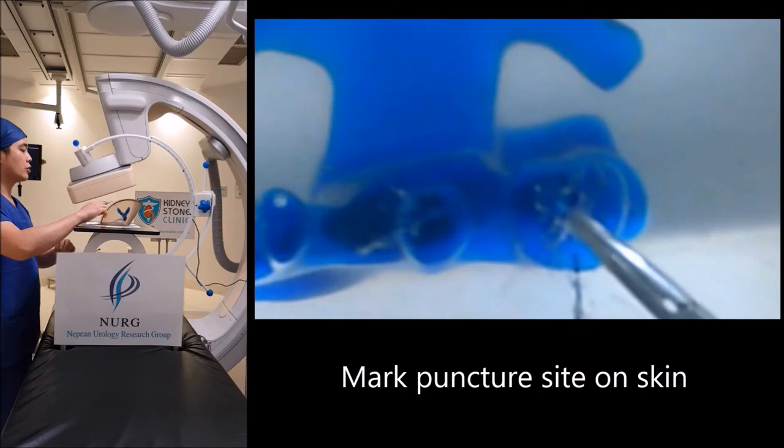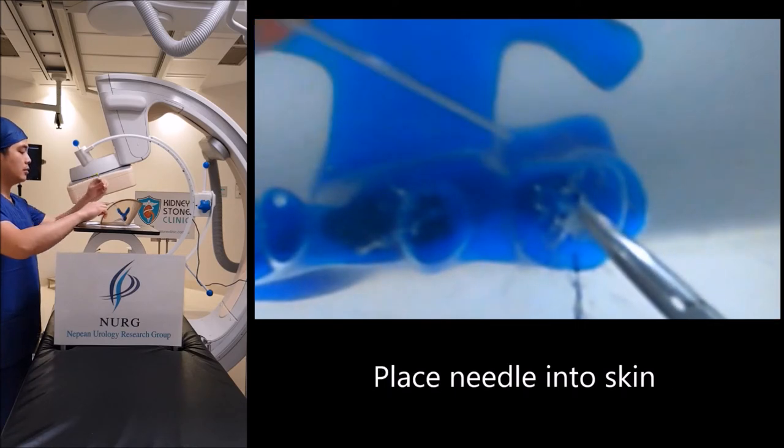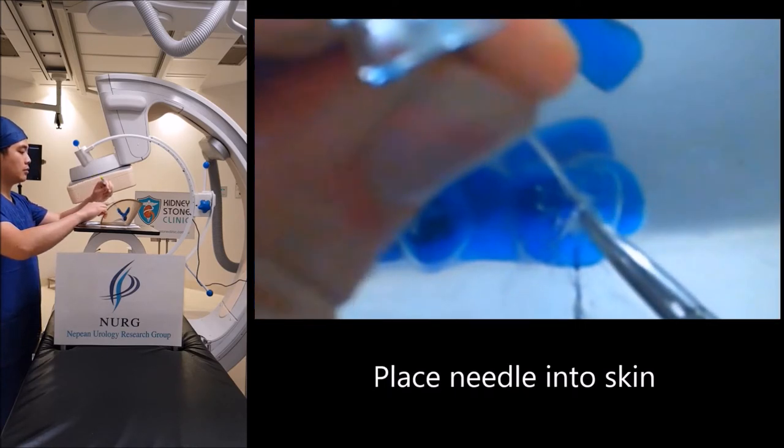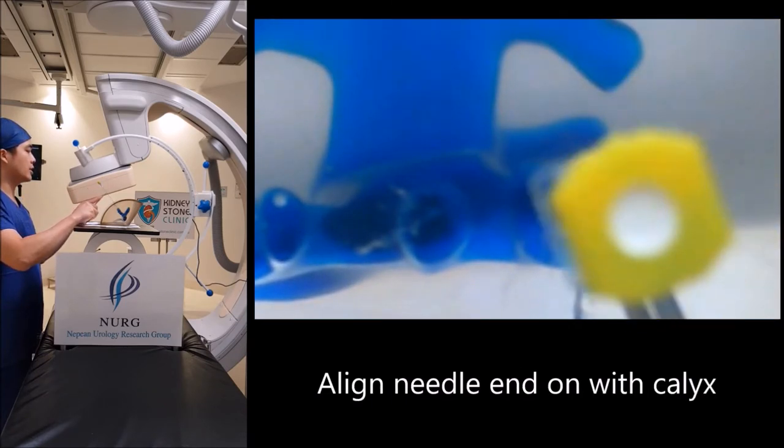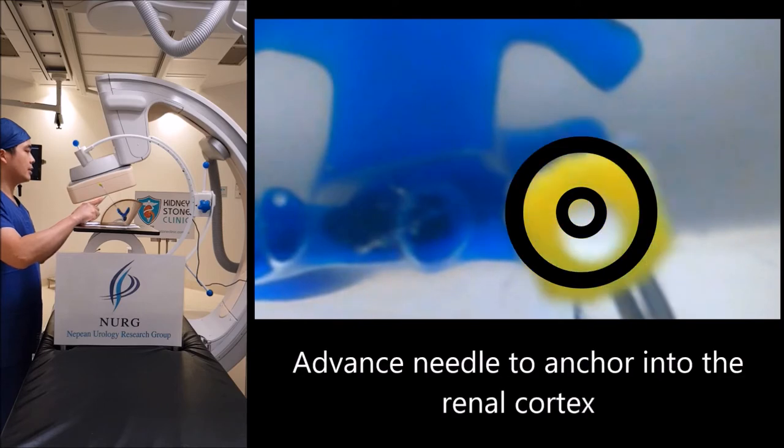Use the image intensifier to identify the puncture site on the skin. Place the needle slightly into the skin and align the needle directly on with the target calyx and the image intensifier so that it forms a bullseye.